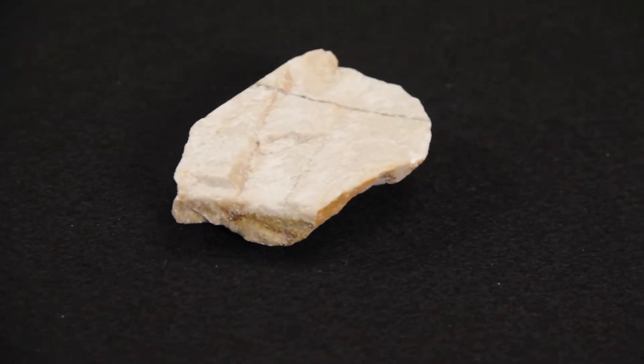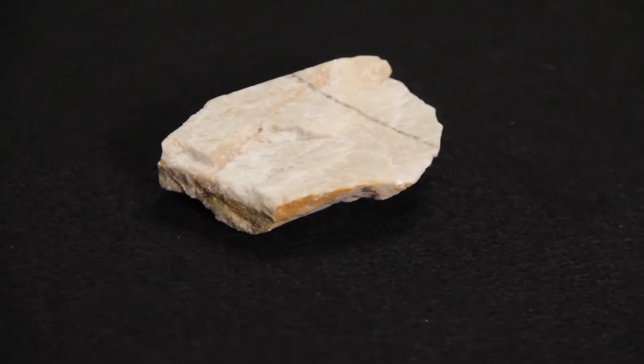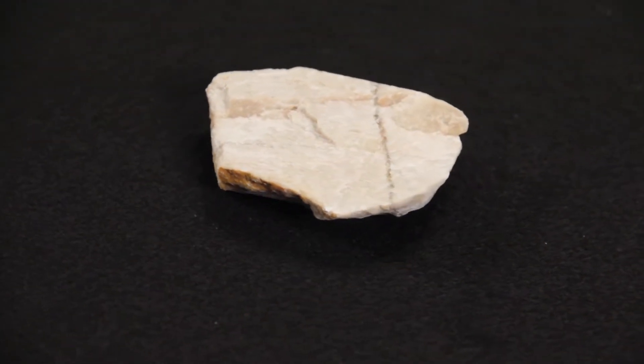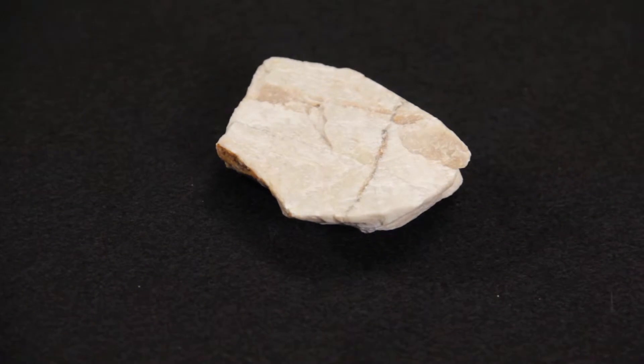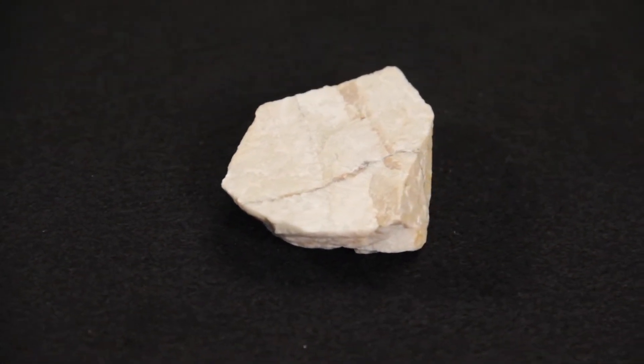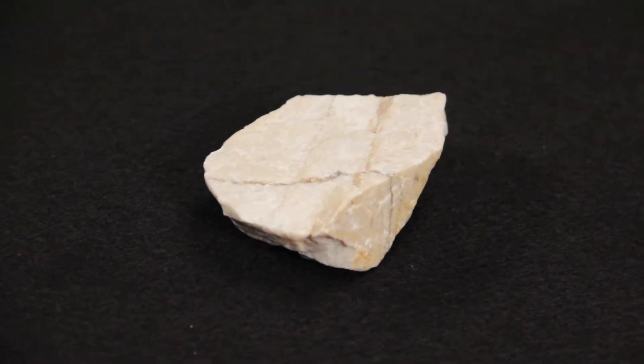Feldspar is actually a very large group of closely related minerals. They mostly display the same basic set of features, so we can just refer to the whole group as feldspar. Also, feldspar is one of the most common minerals in the Earth's crust. It is found in many types of igneous and metamorphic rocks.